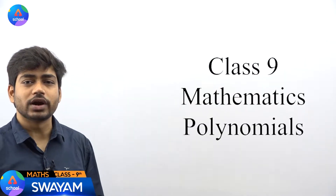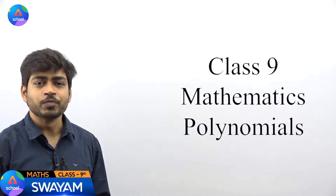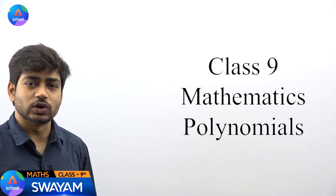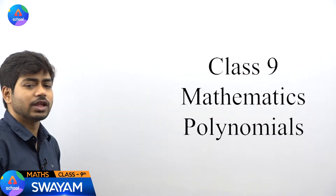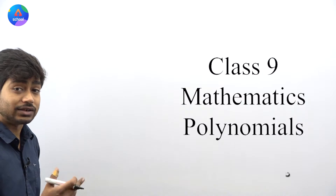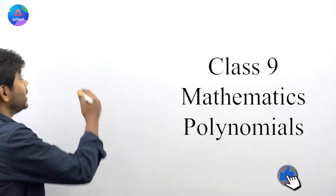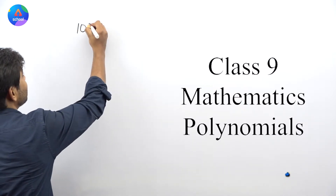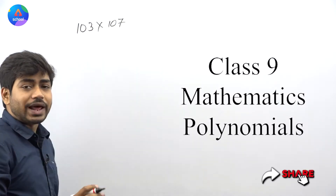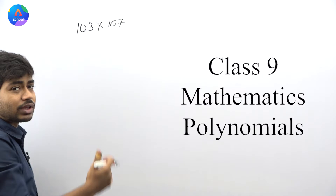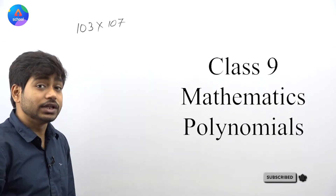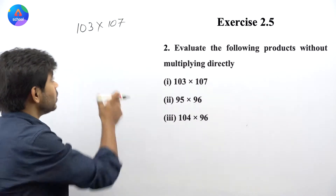Hello and welcome students to ADA247 online school. We are doing polynomials Exercise 2.5, question number 2. The question says: evaluate the following products without multiplying directly. We are not to multiply directly — we have to use algebraic identities here.